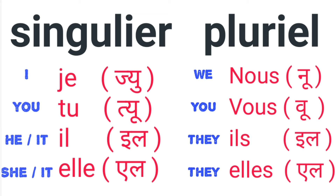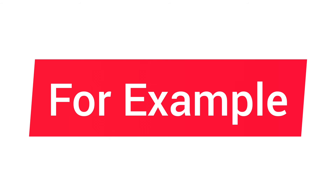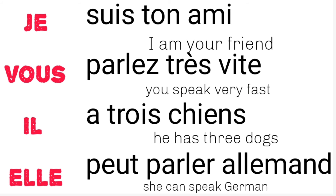Next is 'we' — in French we call it 'nous.' Then 'you' in the plural or formal version is 'vous.' And for the feminine plural, we use 'elles.'